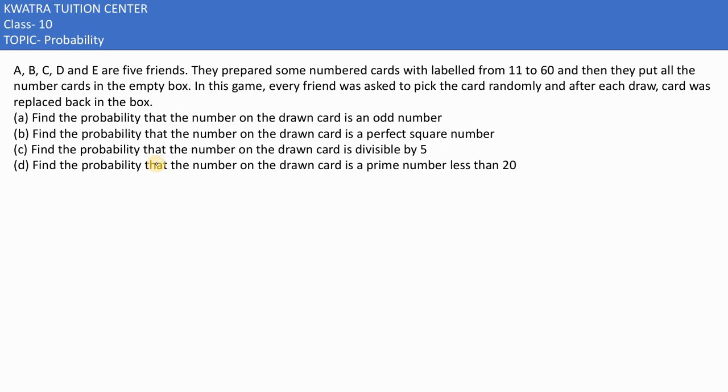Now in the next one it says A, B, C, D and E are five friends. They prepared some numbered cards from 11 to 60. 11 to 60, how much do we have the numbers? We would be having 15 more. After this, we understand that the total favorable outcomes are 50.